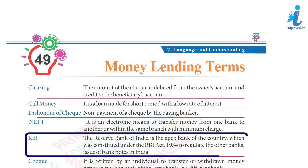RBI — the Reserve Bank of India is the apex bank of the country, which was constituted under the RBI Act 1934 to regulate other banks and the issue of banknotes in India.